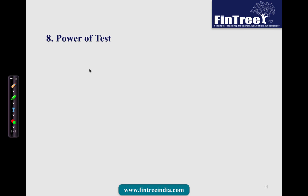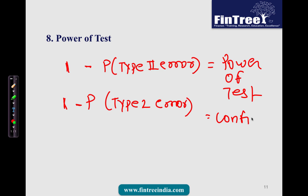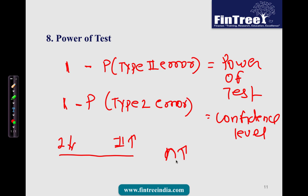The power of a test is 1 minus the probability of Type 2 error. Similarly, 1 minus the probability of Type 1 error is called the confidence level. We also know from Level 1 that if you try to reduce the probability of Type 1 error, the probability of Type 2 error will increase. The only way to reduce both errors simultaneously is by increasing your sample size n.